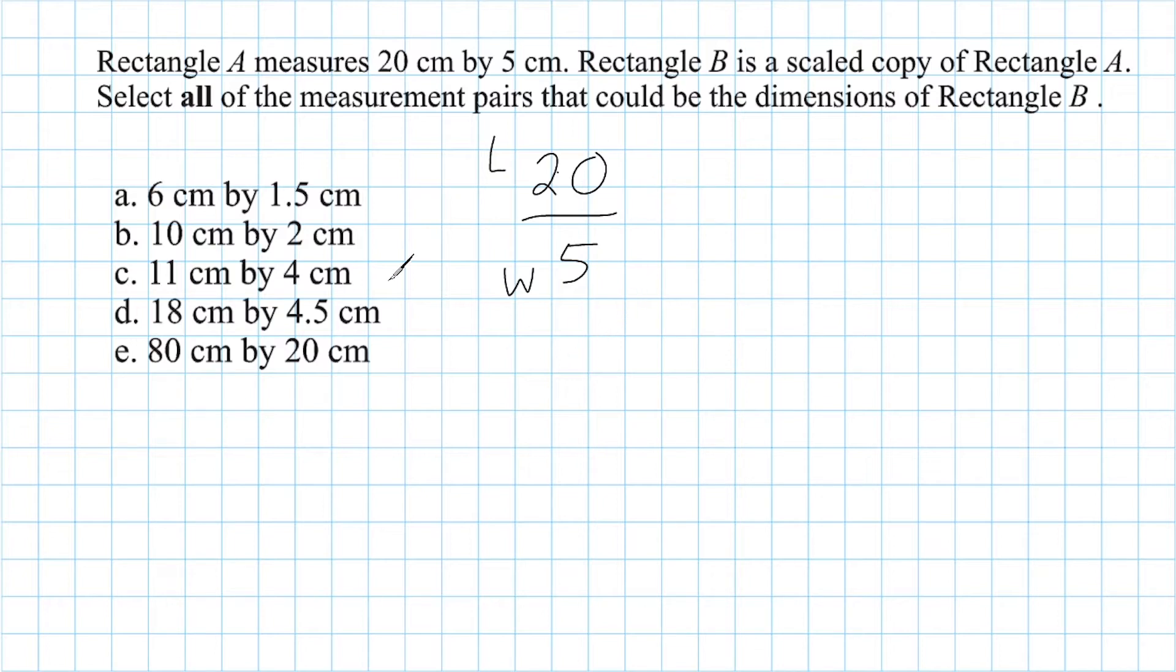So let's take the dimensions for choice A, which have a length of 6 and a width of 1.5. Now, because this rectangle's length is exactly 4 times bigger than its width, we would say that this rectangle is a scaled copy of rectangle A. So we should select choice A.